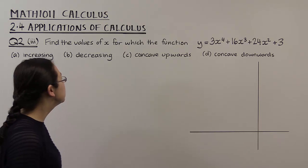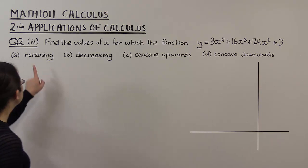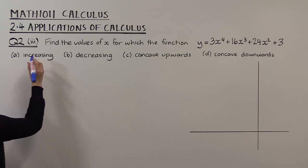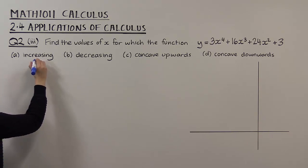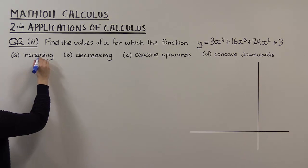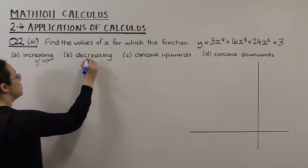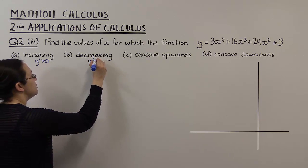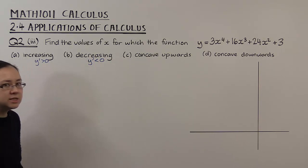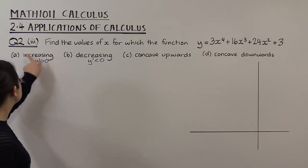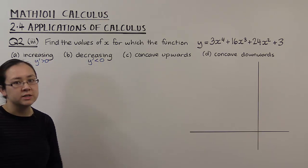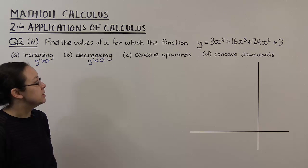First of all, if we want to find when the function is increasing and decreasing, what we're trying to do is solve y' greater than zero, and for decreasing we're trying to solve y' less than zero. So when is the slope of the tangent positive, and when is the slope of the tangent negative?